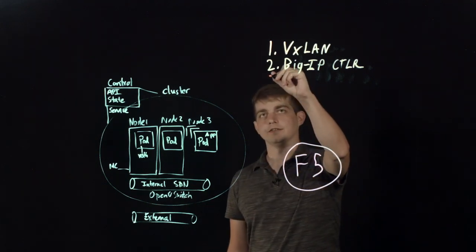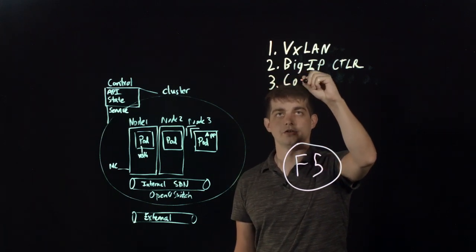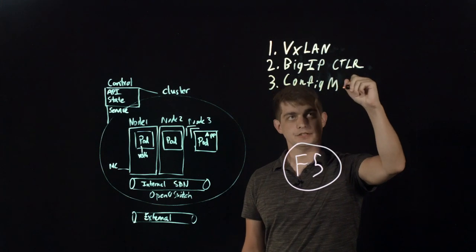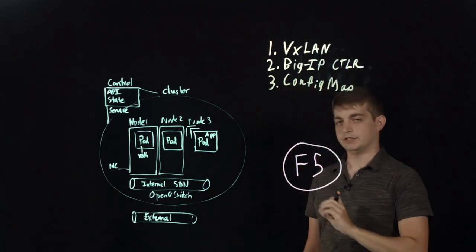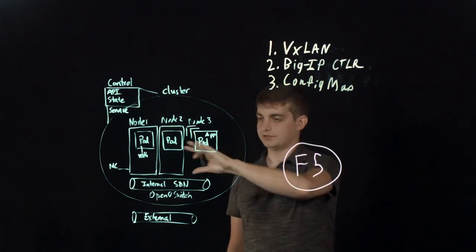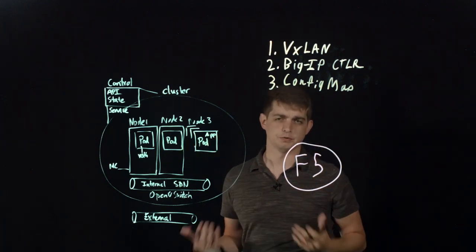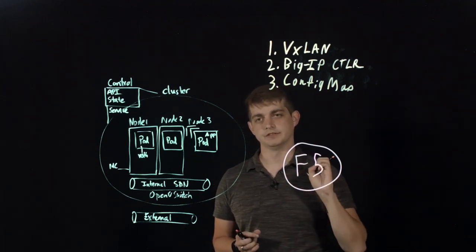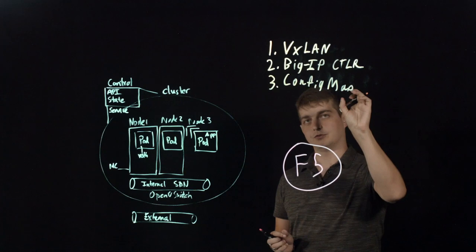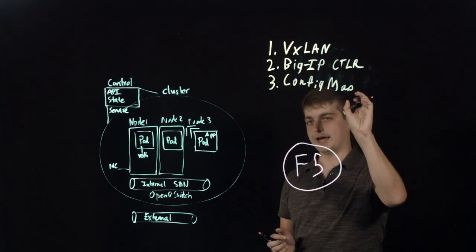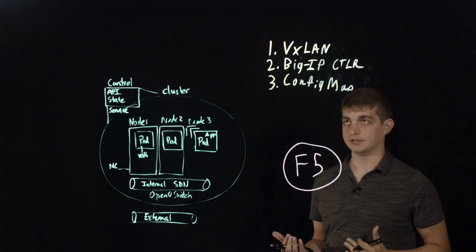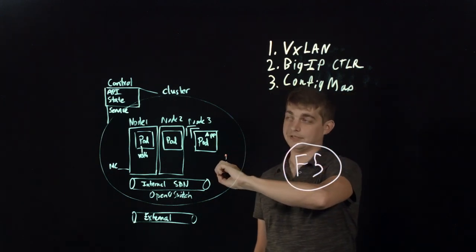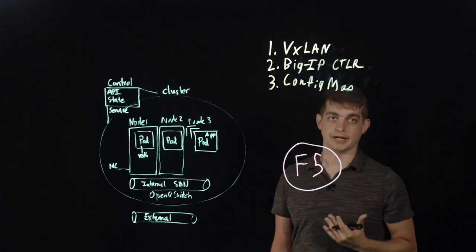And the final thing that's really a component of this process is something that we call the config map. And what the config map basically does in this configuration is it will map the services that are provided with these different pods. So, services provide network connectivity and map those back to VIPs and pools that exist on the F5 device. So, as we create these configuration maps with our deployments to deploy these applications, the config map is basically going to talk to the BigIP controller and create these VIPs and pools dynamically.